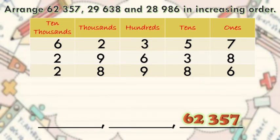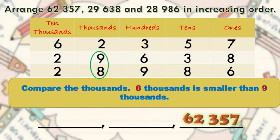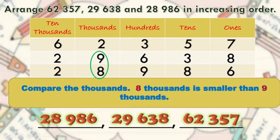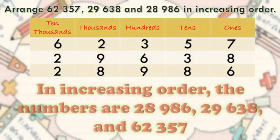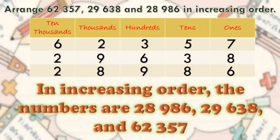Let us now compare the thousands place. Eight thousands is smaller than nine thousands. Therefore, 28,986 is the smallest number, and the number in the middle is 29,638. In increasing order, the numbers are 28,986, 29,638, and 62,357.